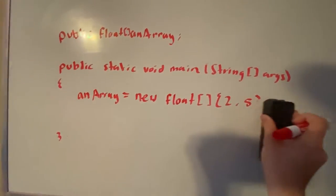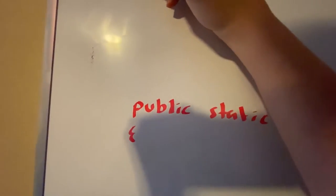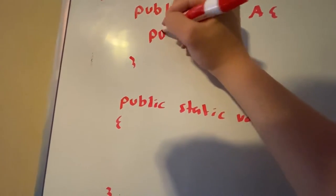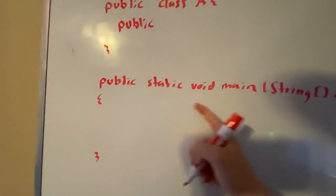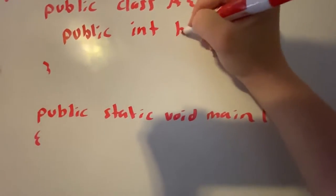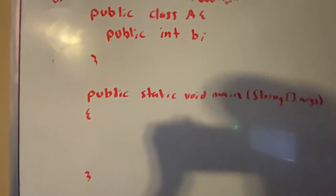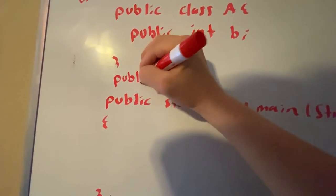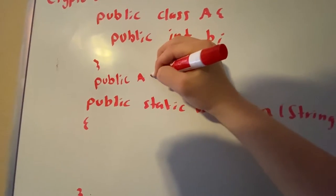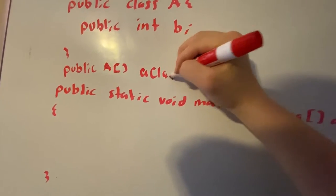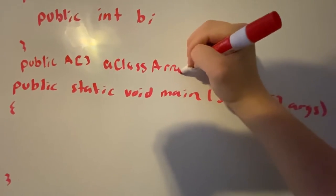So now I'm going to show you something a little more complicated. So let's say we have a class. Let's say in here, we have a variable called, I'm going to make it public because we want to change it in our main class. We're going to do public int b. Okay. So now we can make arrays for our classes too. We do this by doing public a array.